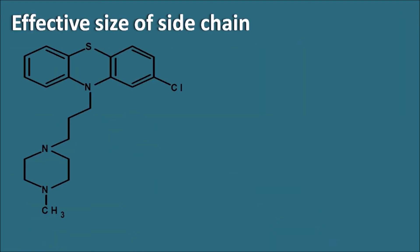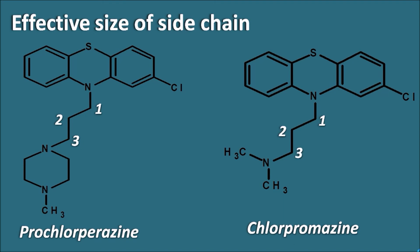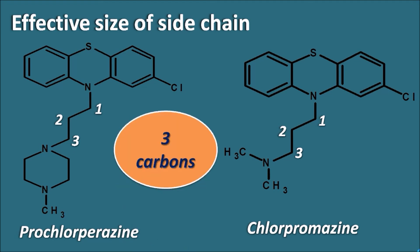Regarding the effective size of the side chain: comparing prochlorperazine (piperazine side chain) with chlorpromazine (alkyl side chain), the distance between the nitrogen of the phenothiazine ring and the nitrogen of the piperazine ring in prochlorperazine is three carbons. Similarly, in chlorpromazine there are also three carbons. This indicates that the optimal distance between the two nitrogens is three carbons in phenothiazines.